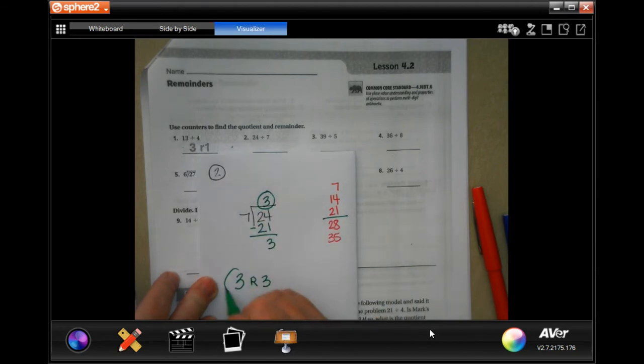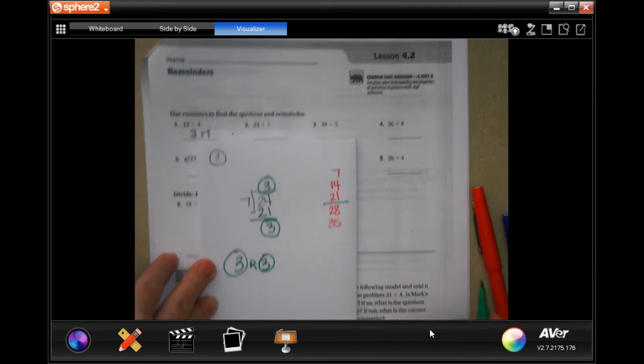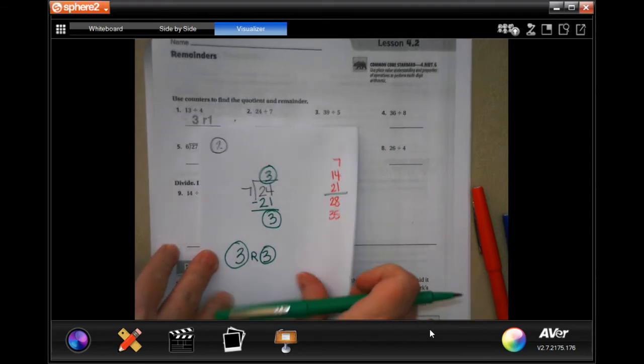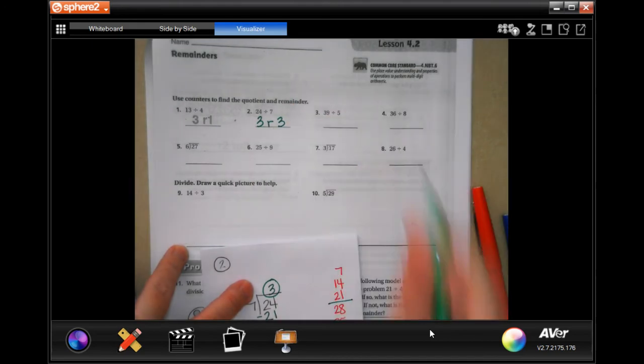This is my whole number here. This is my remainder here. So three remainder three.